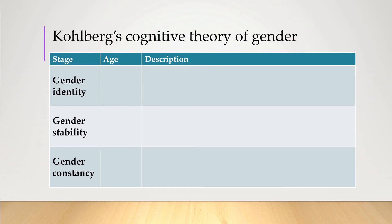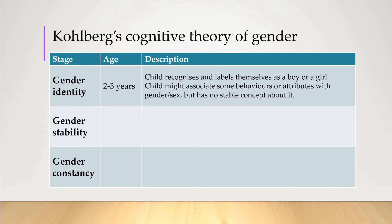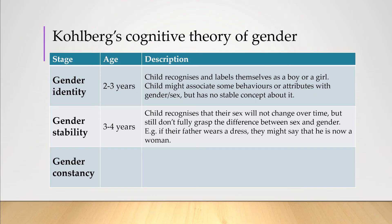According to Kohlberg, the gender identity stage occurs at around two to three years of age, where the child recognizes and starts to label themselves as a boy or a girl. The child might also start to associate some behaviors or attributes with a specific gender or sex, but doesn't really have any stable concept about it — not really knowing where it came from or what might happen to it.